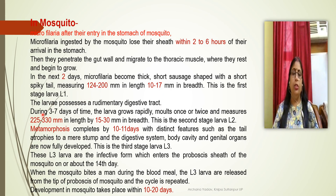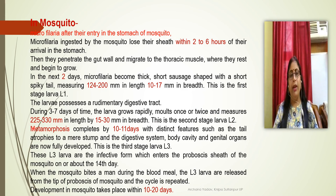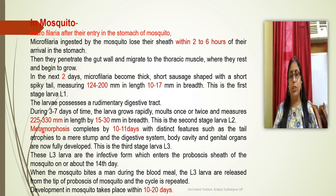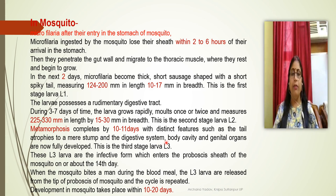After three to seven days, the larva grows rapidly and doubles in size, measuring 250 to 330 mm in length and 15 to 30 mm in breadth — this is the second stage larva. The metamorphosis process is completed in 10 to 11 days, during which body systems including the digestive system, body cavity, and genital organs are fully developed. The final stage is L3, the infective third stage larva.